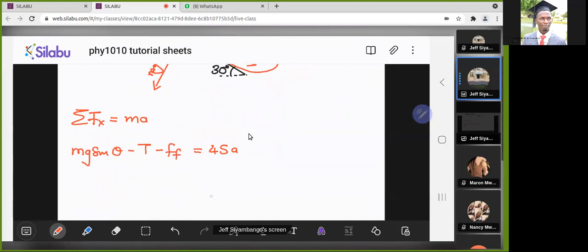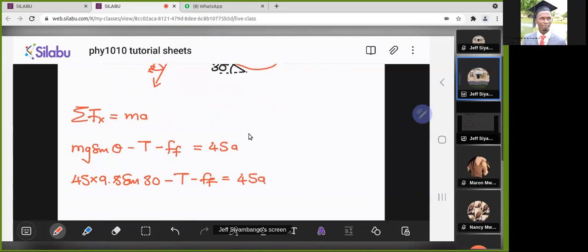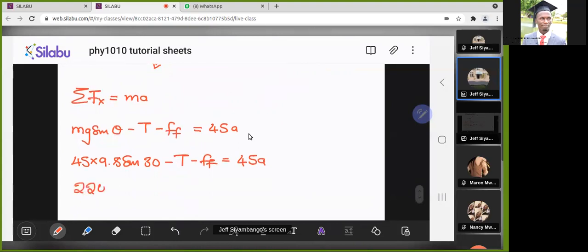From here we can now perform the substitution of what we know. The mass is 45, g is 9.8, then this is sine 30, minus T minus the force of friction, equals 45a. We can multiply these. That's 45 by 9.8 multiplied by sine 30. We get 220.5 minus T minus friction equals 45a.